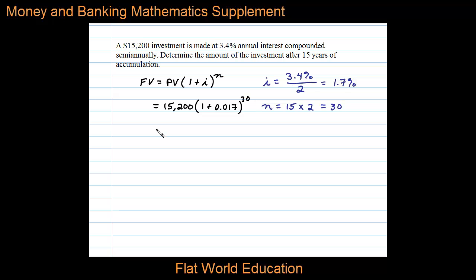We can simplify the calculation a little bit by writing $15,200 times 1.017 raised to the 30th power. Now in a calculator, we get $25,204.16.